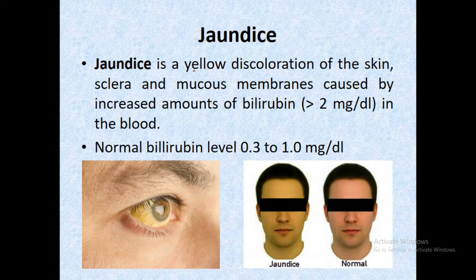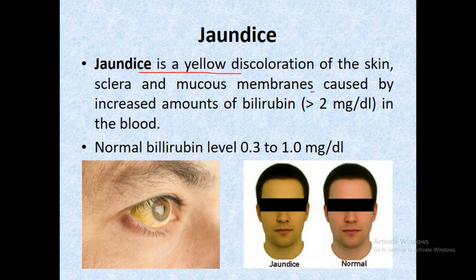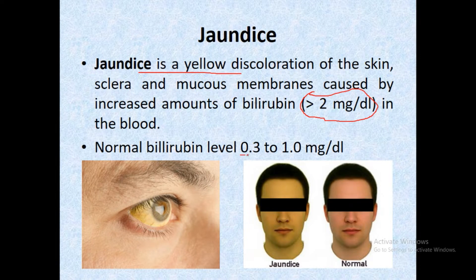Jaundice is defined as yellow discoloration of the skin, sclera, and mucous membranes caused by an increased amount of bilirubin. Jaundice occurs when bilirubin concentration exceeds 2 mg/dL. The normal serum bilirubin level is 0.3 to 1 mg/dL. The photograph shows yellow discoloration of the sclera and skin.